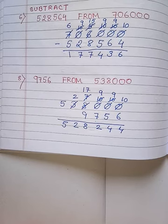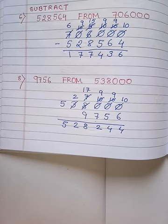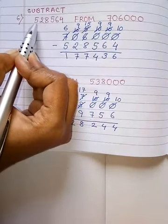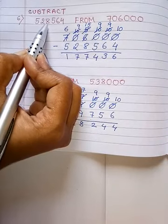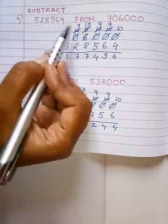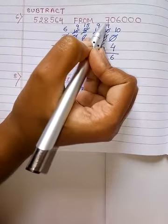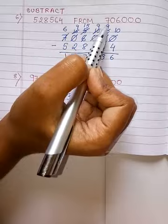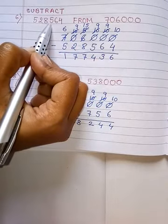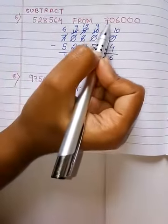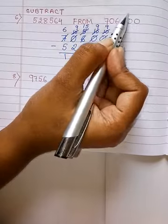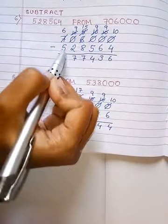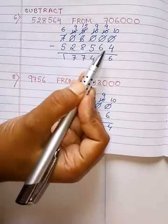From sum number B, the question is: subtract 5,28,564 from 7,06,000. So from 7,06,000 we have to subtract this number. First write down the number 7,06,000, then the number 5,28,564.